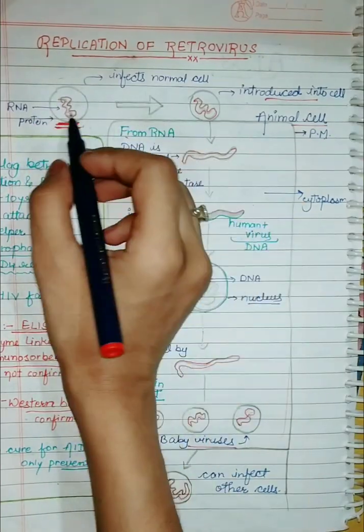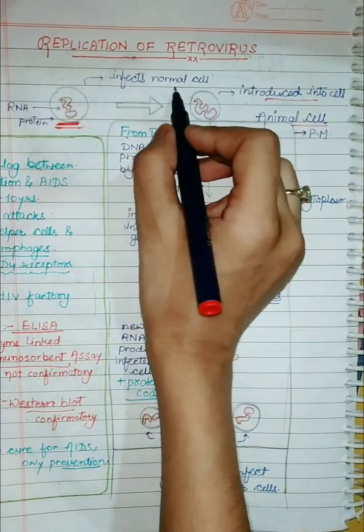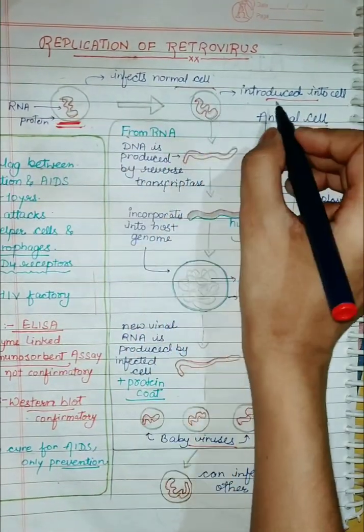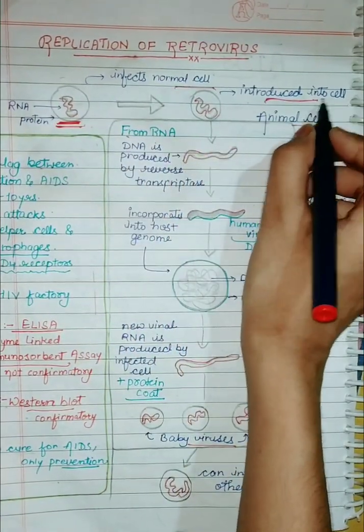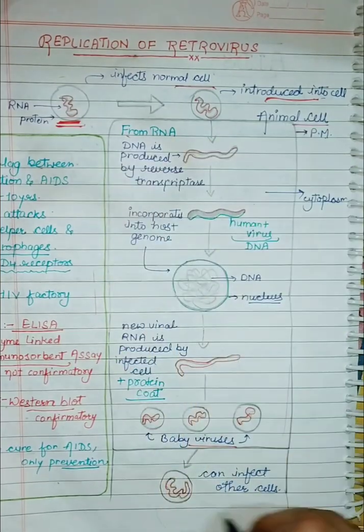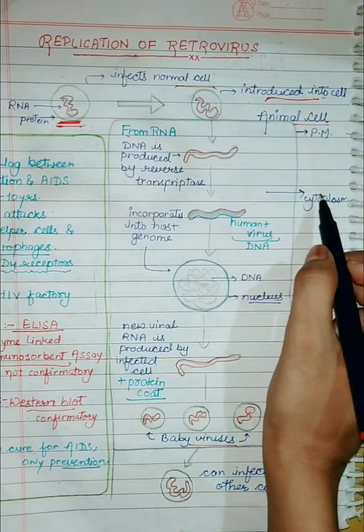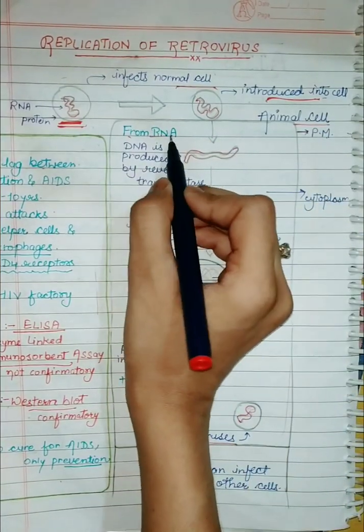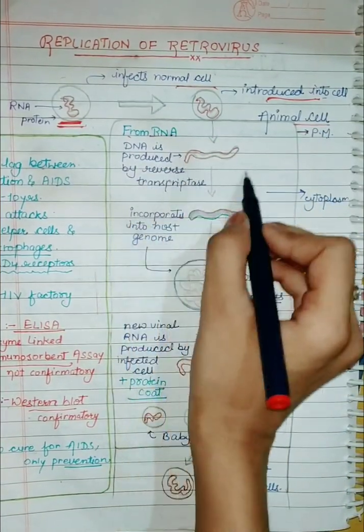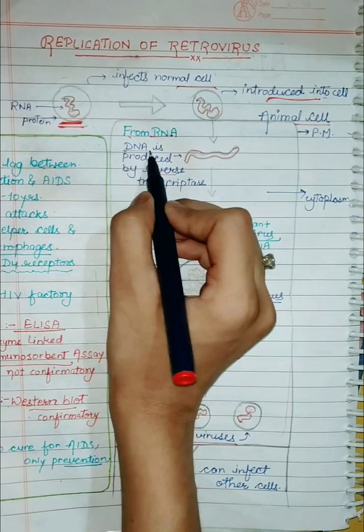This is the structure of the virus. Firstly, it will infect a normal cell. It will introduce itself into our cell, that is an animal cell. This is the plasma membrane and the cytoplasm. Then, from RNA, this virus will produce DNA.